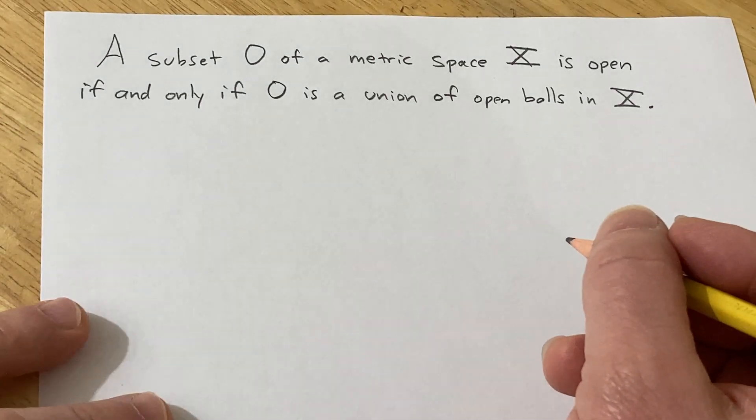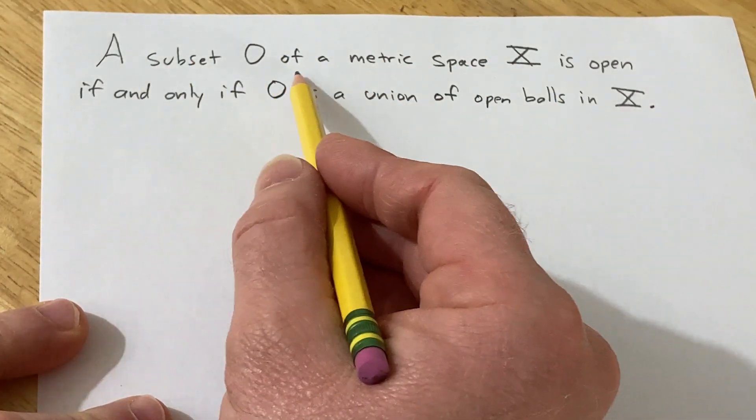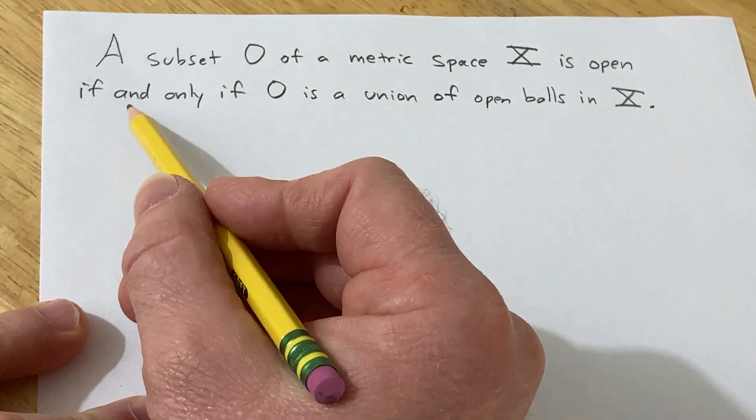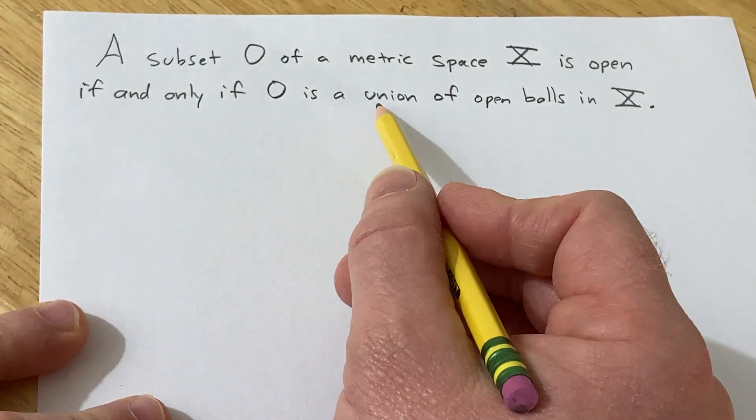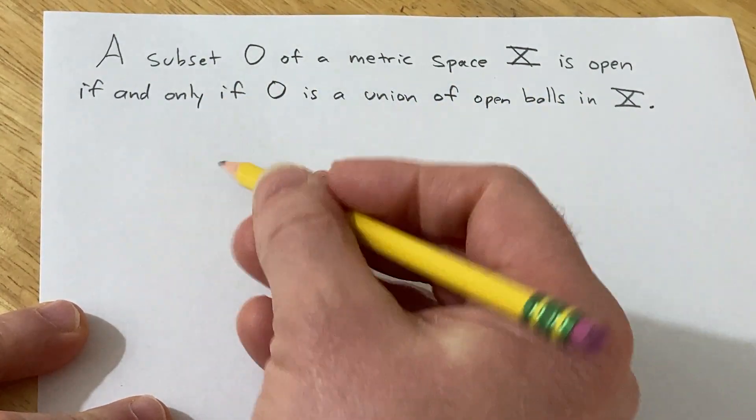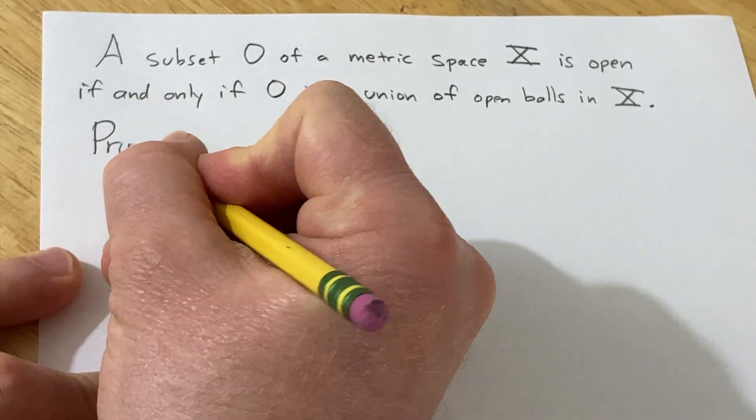Hello, in this problem we are going to do a proof. A subset O of a metric space X is open if and only if O is the union of open balls in X. Let's jump into the proof right away.